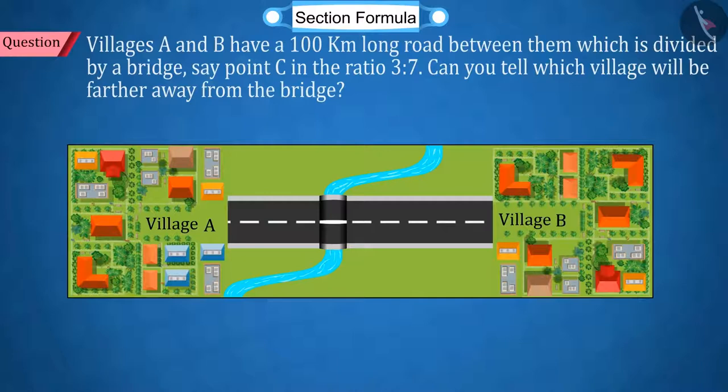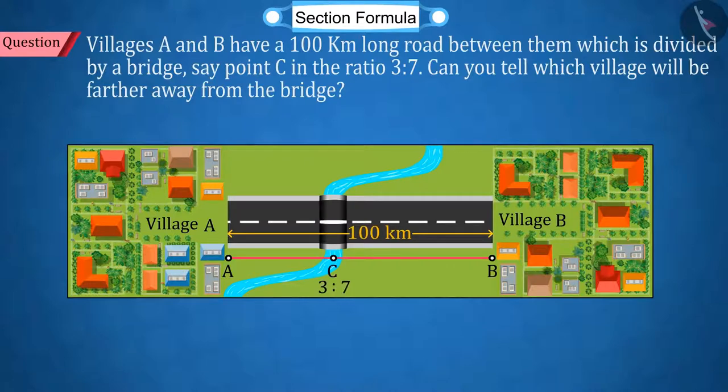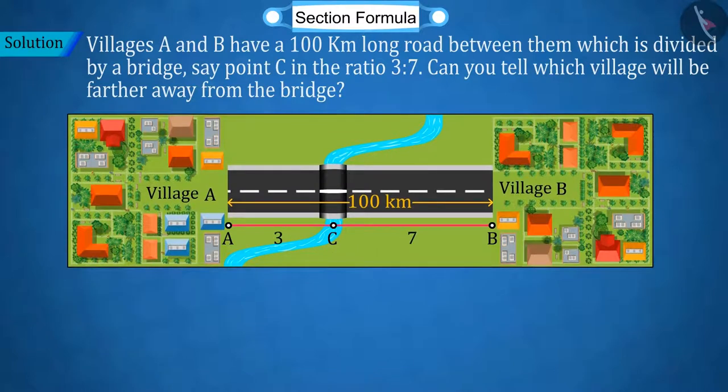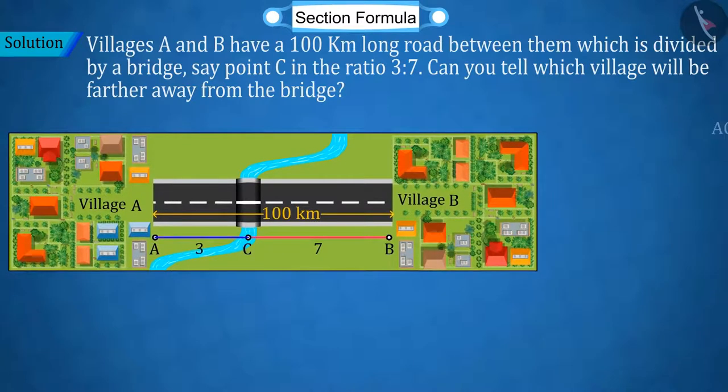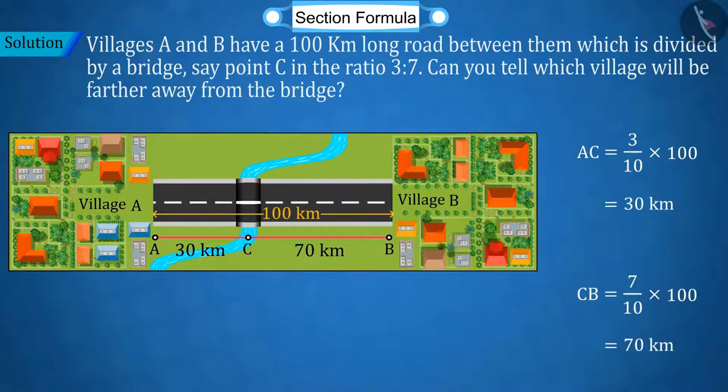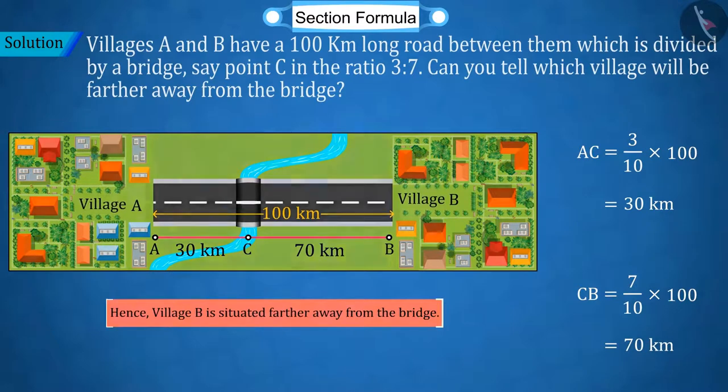Villages A and B have a 100 km road in between which is divided by a bridge that is point C into 3 ratio 7. So can you tell which of the two villages will be farther from the bridge? Well done. For this, we add both parts of the ratio and see that one part of the road, AC, is 30 km while the other part is 70 km. Hence, we can say that village B is at a greater distance from the bridge.